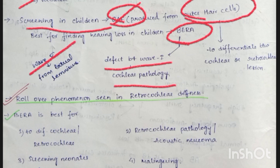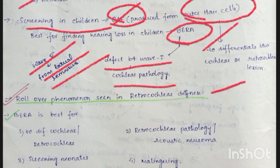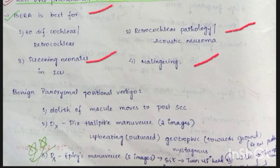Otoacoustic emission is used to differentiate between cochlear and retrocochlear lesions. Rollover phenomenon is seen in retrocochlear deafness. BERA is best for differentiating between cochlear and retrocochlear deafness, screening neonates in ICU, retrocochlear pathology or acoustic neuroma, and malingering.